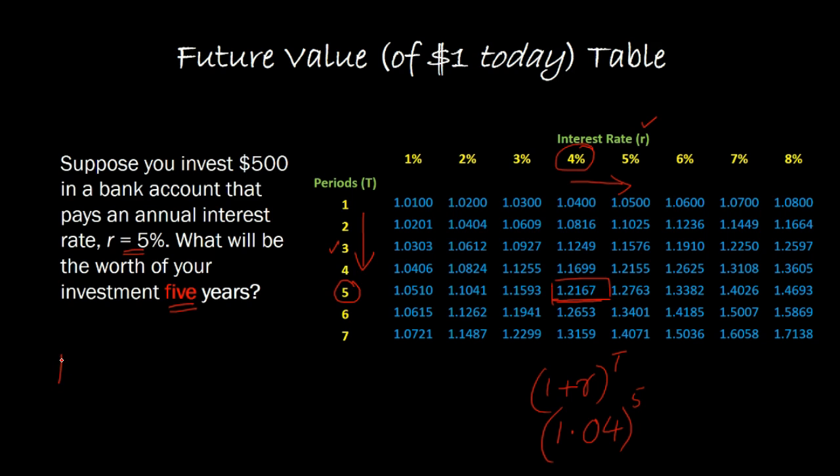you would say the future value five years from now of 500 will be 500 times 1.05 raised to the power 5. What I'm saying is